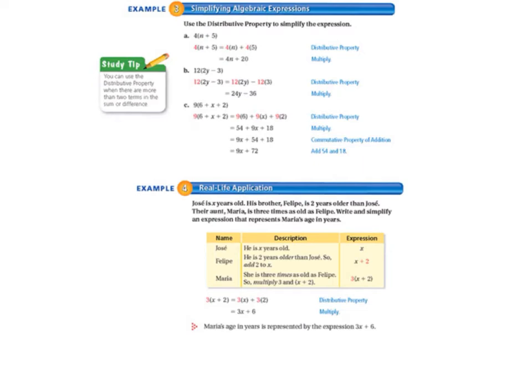Moving on to page 135, example 3, we're simplifying algebraic expressions. When we simplify things, we're just making it so that there are fewer terms and everything's neat and tidy. Example 3a, we're using the distributive property to simplify the expression. 4 times n plus 5, we use the distributive property to multiply that 4 by everything inside the parentheses. So 4 times n plus 4 times 5 equals 4n plus 20.